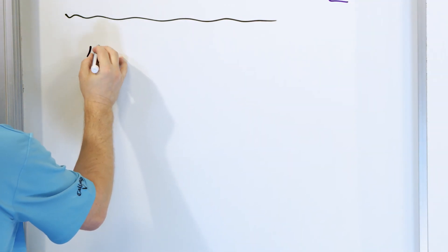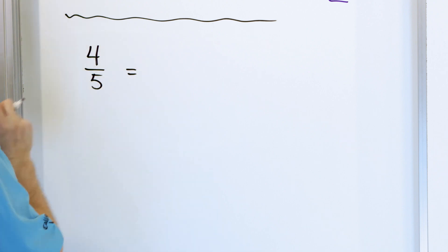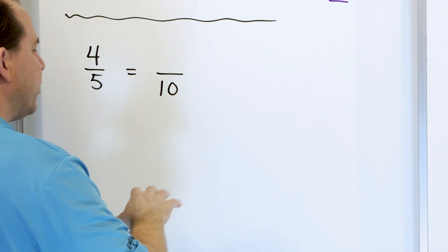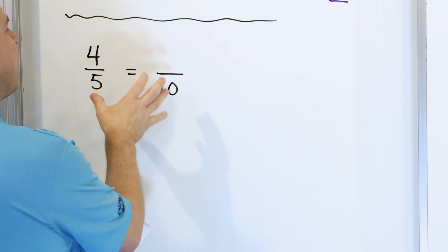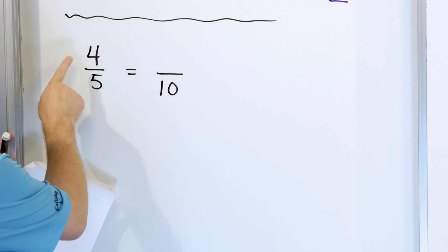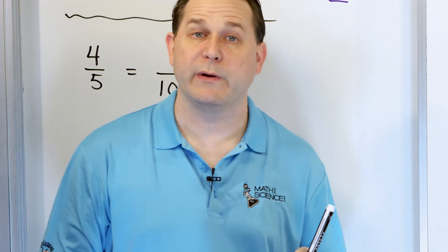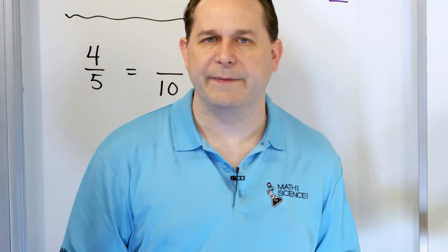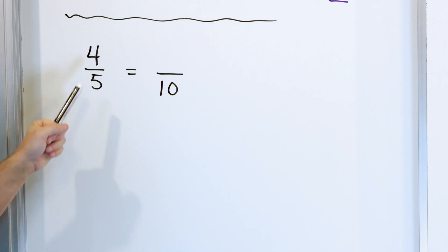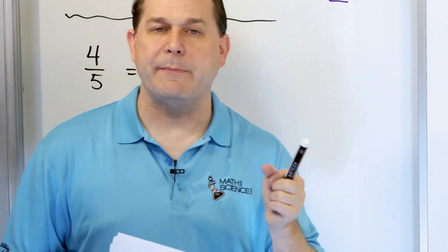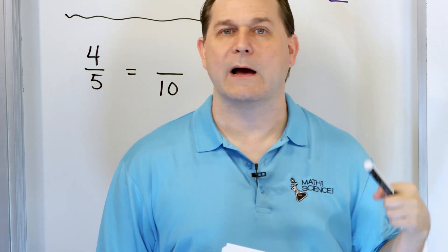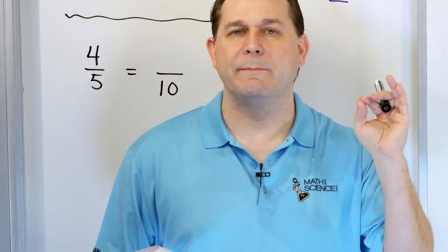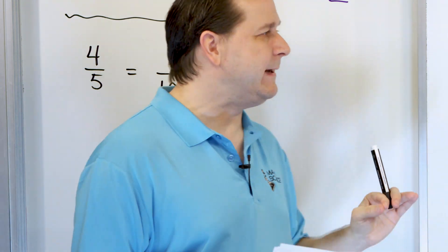Alright, so the next problem is: we have the fraction 4/5, and we're going to find an equivalent fraction that has a 10 in the denominator. What do we have to figure out for the numerator? We're going to solve the problem and then check that the answer is right. We have this fraction 4/5. We can multiply that fraction by any number we want as long as we do it to the top and the bottom — we will find a new equivalent fraction that will look different but mean the same thing. I can multiply this fraction top and bottom by 2, by 6, by 17, by 1,000 — it doesn't matter what I multiply by. But I must multiply top and bottom by the same number to keep the fraction equivalent.